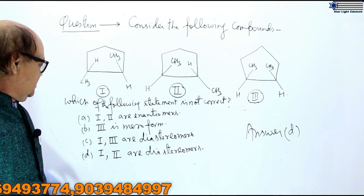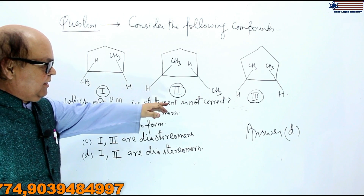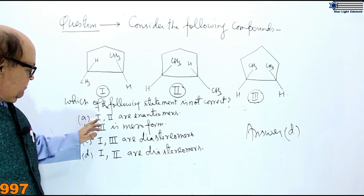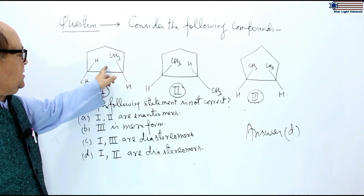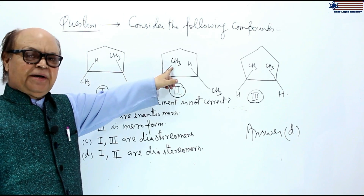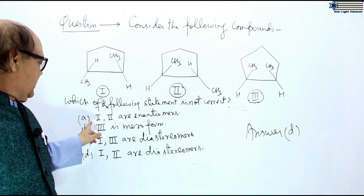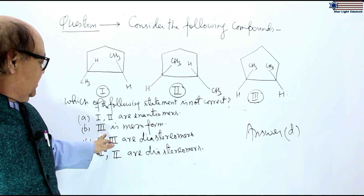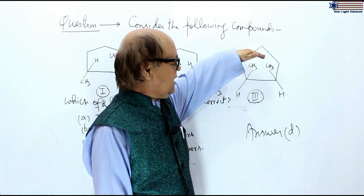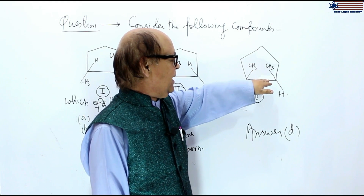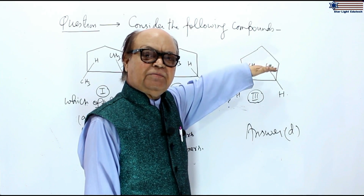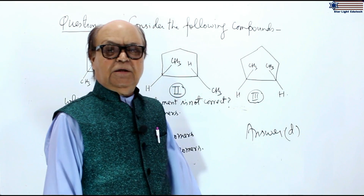Consider the following compounds. Which of the following statements is not correct? Statement A: first and second are enantiomers because they are mirror images of each other — therefore statement A is correct. Statement B: third is meso form because the same groups or atoms are at the same side of the flat cyclopentene ring — therefore it is meso, and statement B is correct.